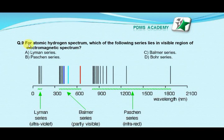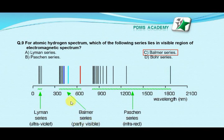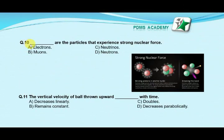Our next MCQ is: for the atomic hydrogen spectrum, which of the following series lies in the visible region of the electromagnetic spectrum? Option A: Lyman series, option B: Paschen series, option C: Balmer series, option D: Bohr series. Our correct answer is C: Balmer series. The Lyman series lies in the ultraviolet region (0–300 nm), the Balmer series spans 300–600 nm (visible region), and the Paschen series lies in the infrared region (900–1800 nm).